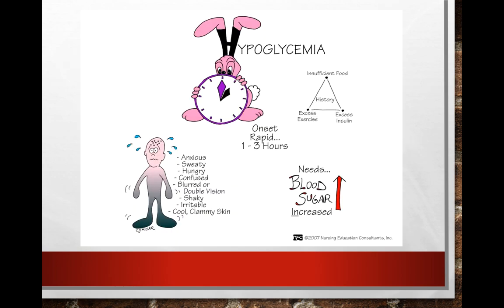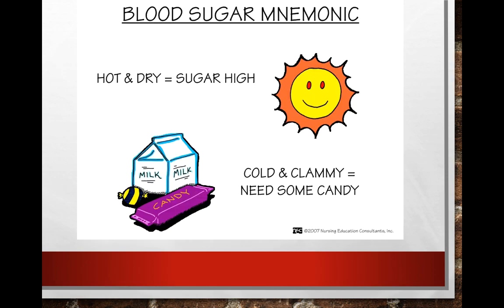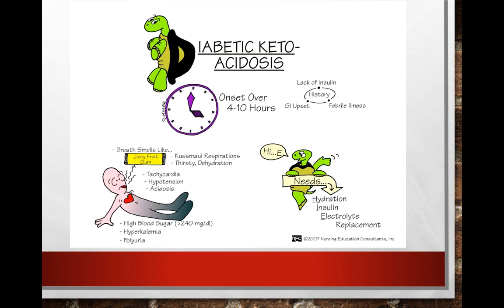Hypoglycemia has a rapid onset of one to three hours, and these are all the symptoms you'll see — the blood sugar needs to be increased. Remember: hot and dry, sugar high; cold and clammy, needs some candy. Diabetic ketoacidosis is where blood glucose has become extremely high, and patients need hydration, insulin, and electrolytes. They have fruity-smelling breath, Kussmaul respirations, they'll be thirsty, dehydrated, tachycardic, and have polyuria. They can have hyperkalemia due to hemoconcentration, and high blood glucose is usually greater than 240.